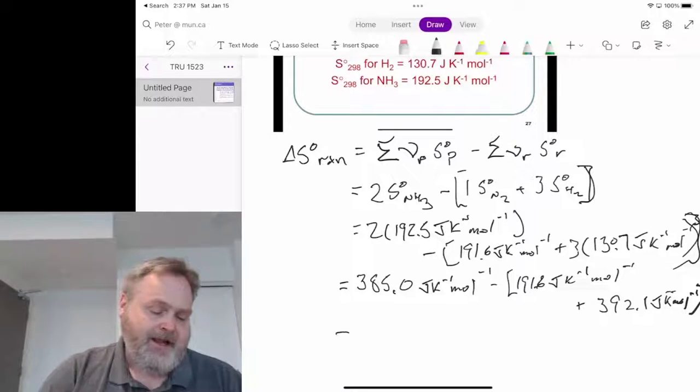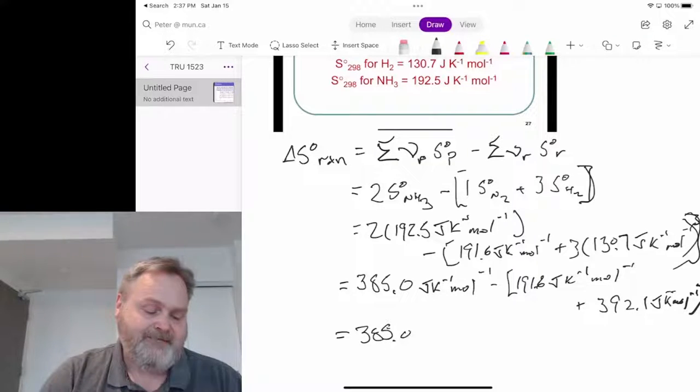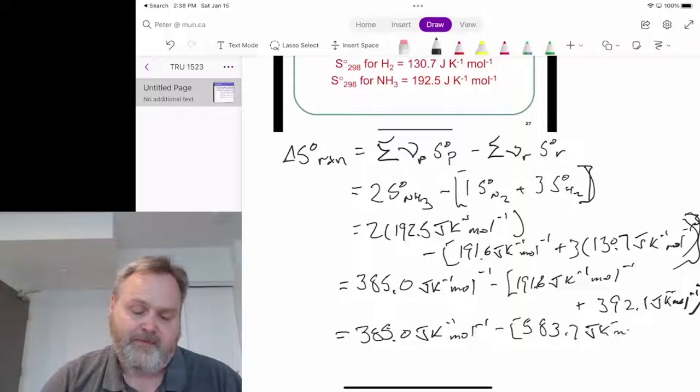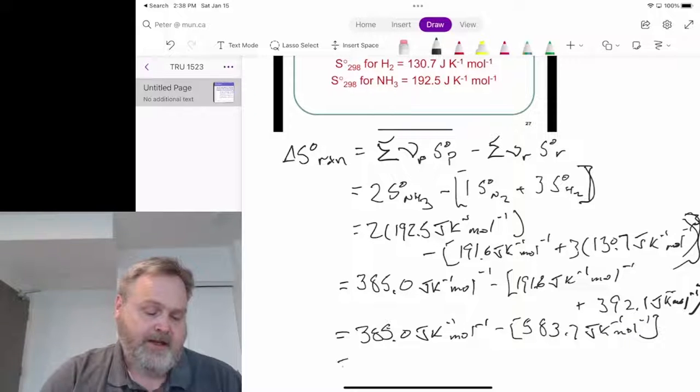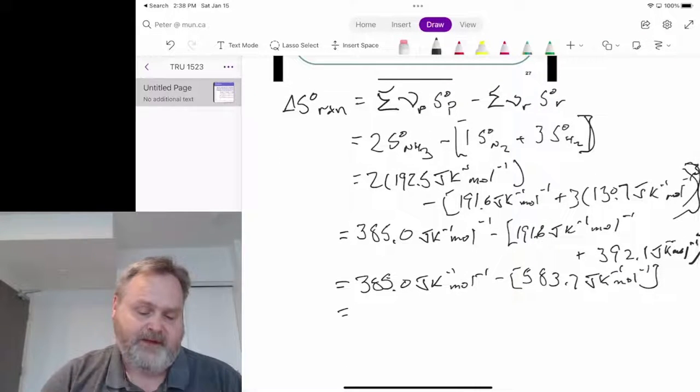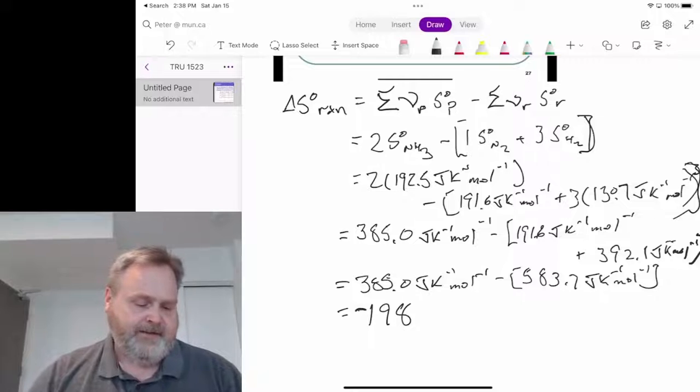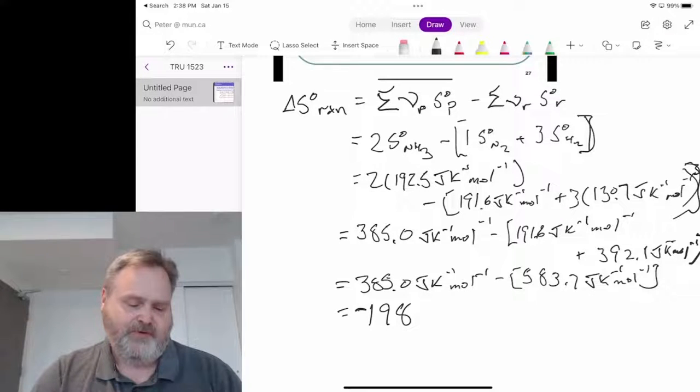Always running out of room. And so that's going to be 385.0 joules per Kelvin per mole, minus, let's do some math, 583.7 joules per Kelvin per mole. And so that's going to give me, looks to be about negative 198.7 joules per Kelvin per mole.